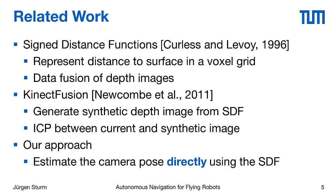Kinect Fusion uses ICP — iteratively closest point — to track the camera pose, which is a very common algorithm to align two point clouds. The problem is that the model is represented using the signed distance function, so Kinect Fusion emulates a synthetic depth image and point cloud and then aligns them using ICP. We realized this is not optimal, and came up with the idea to estimate the camera pose directly using the signed distance function, which is more efficient and even more accurate.